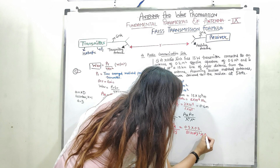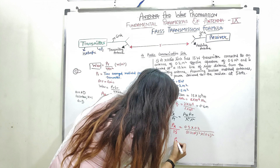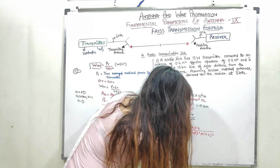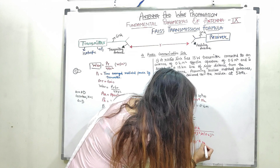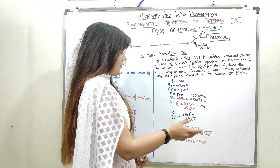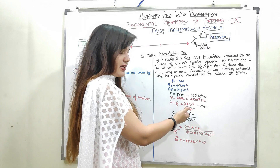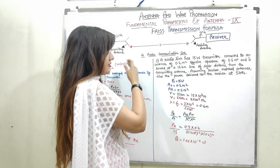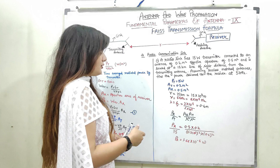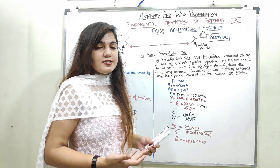Putting all the values and computing, I get PR = 1.66 × 10⁻⁶ Watts. This is how I can compute the received power or transmitted power if all the other parameters are given — that is, the aperture area of the receiver, aperture area of the transmitter, the distance R between transmitter and receiver, and the frequency or wavelength. This relation is called the Friis transmission formula, and the overall system is called the radio communication link.